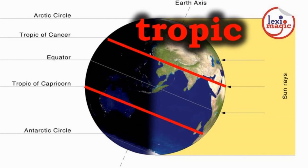Tropic refers to any of the two parallels in the celestial sphere that correspond to the northern and southern passages of the sun. We have the Tropic of Cancer and the Tropic of Capricorn.